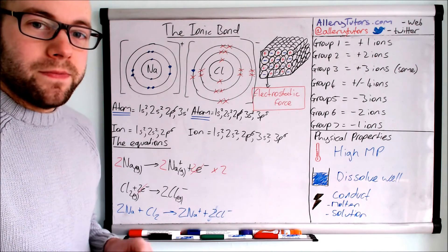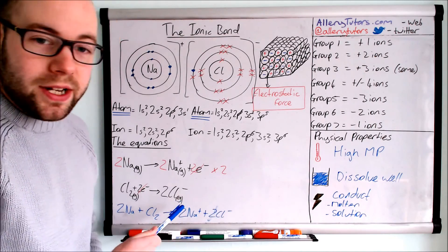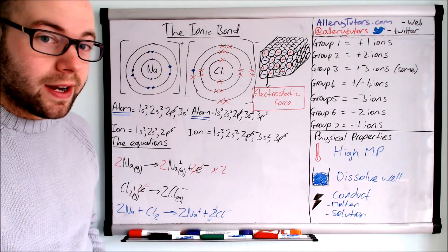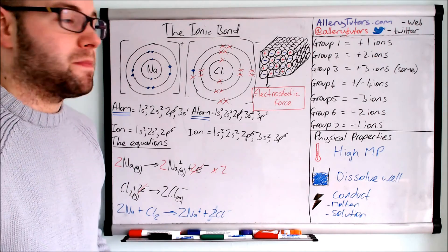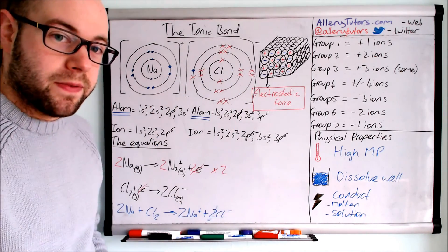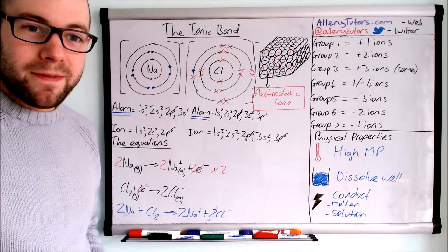There we go. There's the ionic bond. Make sure you get your equations right. You can write half equations correctly. Make sure you know about the physical properties and crucially link them back to structure and bonding. It's very common for them to ask that. That's it. Bye-bye.